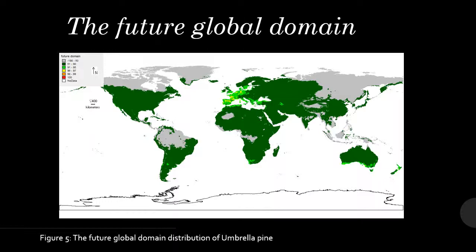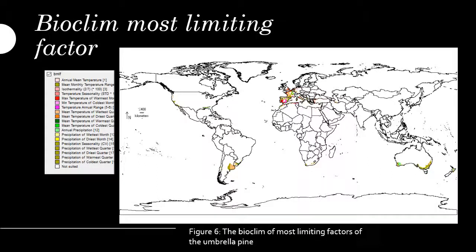This slide shows the current bioclim limiting factors, which shows the most limiting factors in certain parts of the world that could be favorable — and some not favorable — for growing the crop, based on climatic conditions in that area.